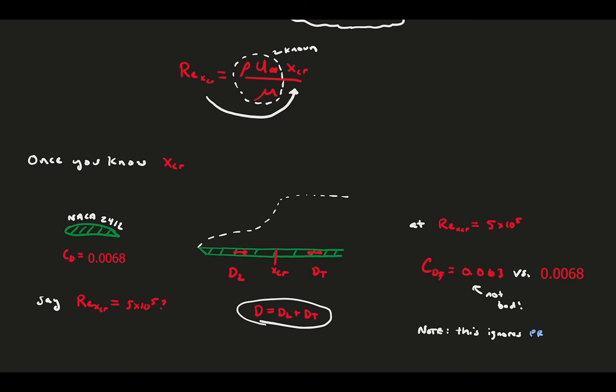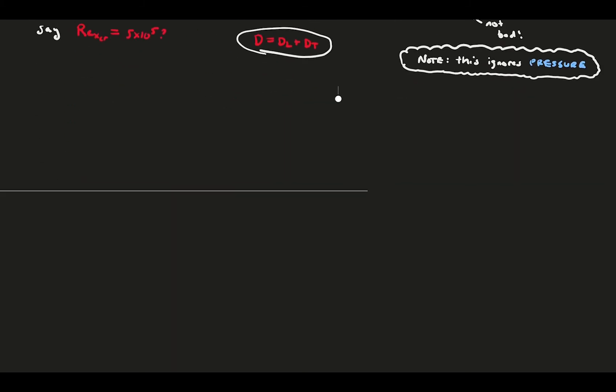Keep in mind that this estimate only includes the viscous drag, and the real thing, there's also pressure drag inside. This leads us nicely into the next segment, which is on pressure drag. Note, pressure drag is commonly referred to as form drag in aerodynamics. It is the imbalance of pressure due to separated flow.